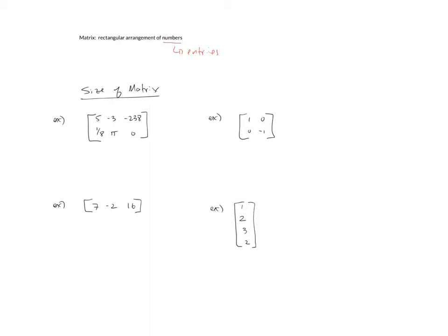The size of a matrix is always defined by the number of rows by the number of columns. Rows run horizontally and columns run vertically. For example, we've got row one and row two, column one, column two,